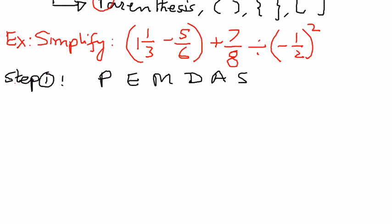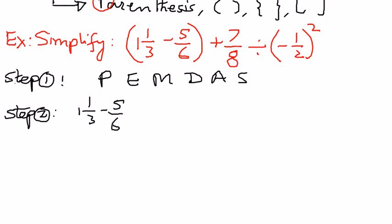We want to work within the parenthesis first, then expand any exponents, then perform multiplication, division, addition, and subtraction from left to right. In step 2, we have parenthesis to open up. We're going to take the terms inside the parenthesis: 1 and 1/3 minus 5/6.